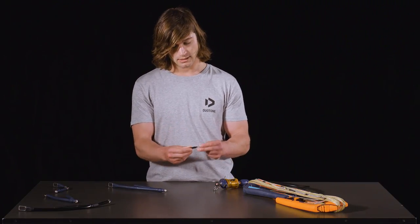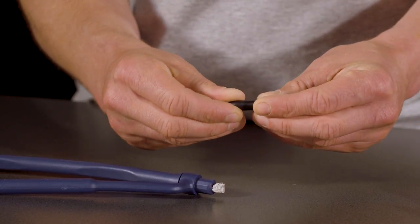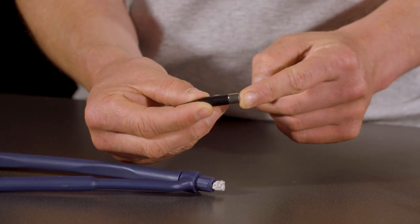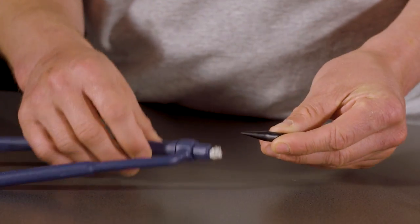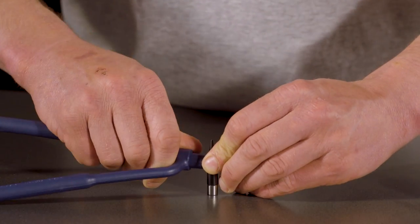This is where the spike tool comes in. The metal bushing fits perfectly onto the end of the spike tool and then the spike tool is used to reinsert that metal bushing back onto the end of the chicken loop.